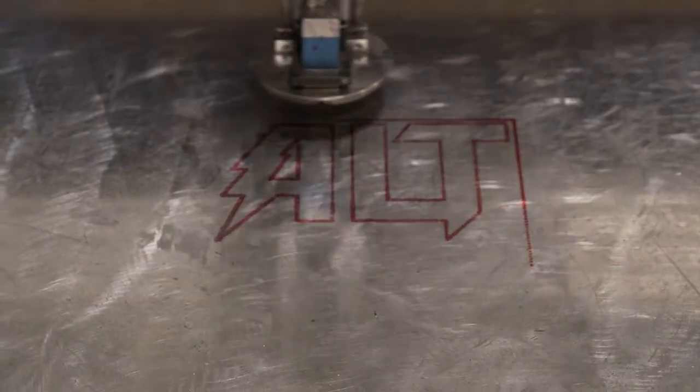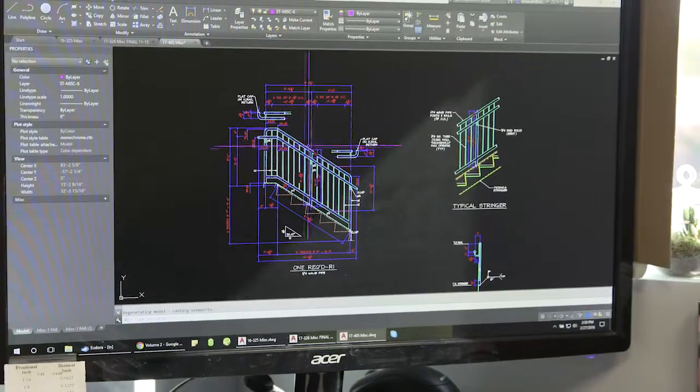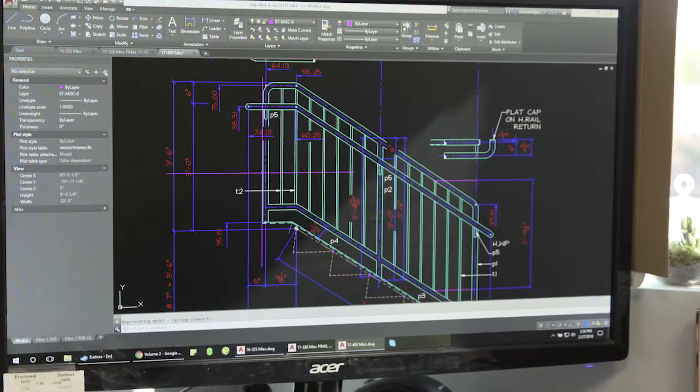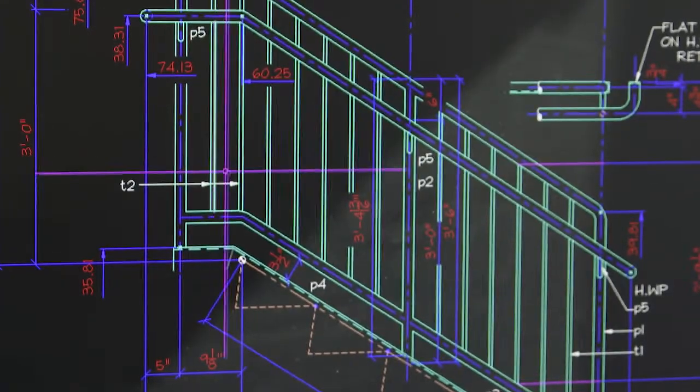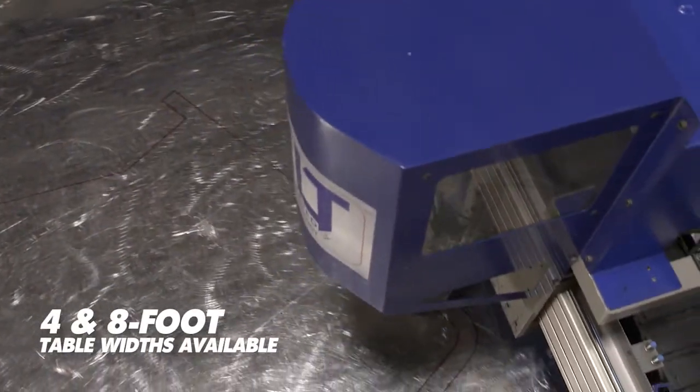The Lightning Rail's straightforward interface is intuitive to operate and works with any DXF file. Its compact design can fit easily into your existing fabrication environment.